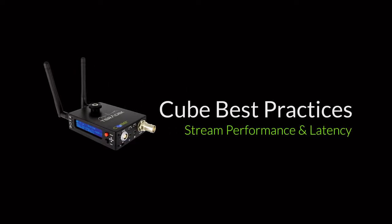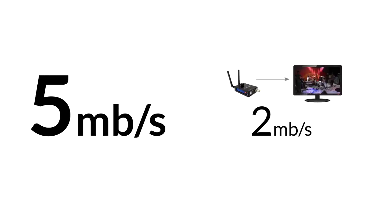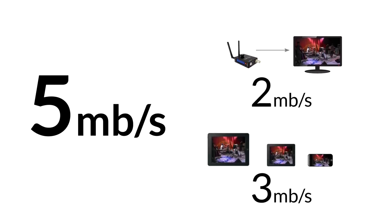Stream performance and latency: The Teradek Cube in master mode is limited to approximately 5 megabits per second of bandwidth. By default, 2 megabits are automatically allocated to a computer or decoder high-resolution stream. The rest of the 3 megabits are allocated to iOS streaming — each iOS device takes 1 megabit. In master mode, we only recommend using up to 3 iOS devices.